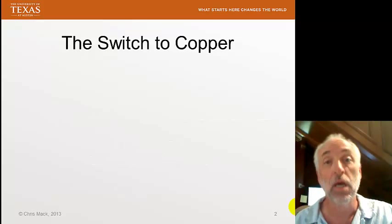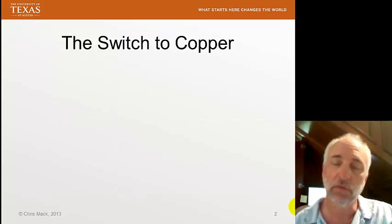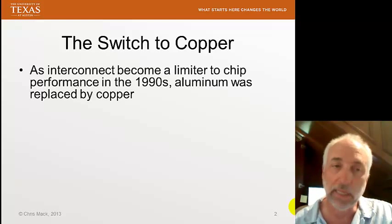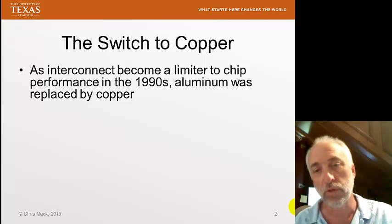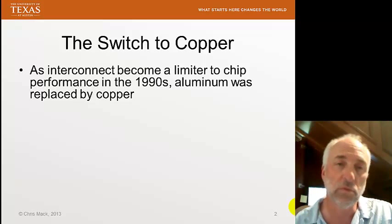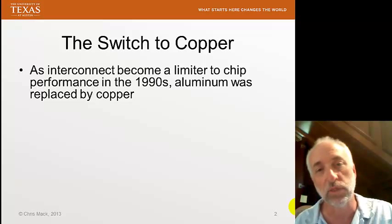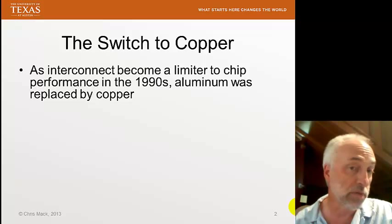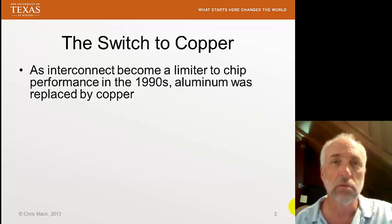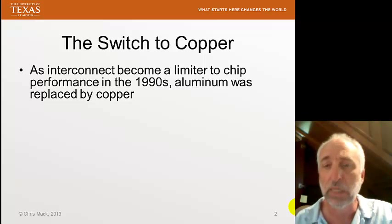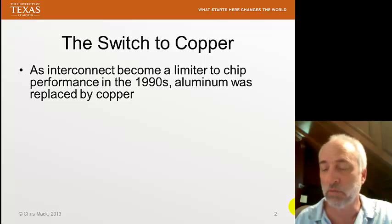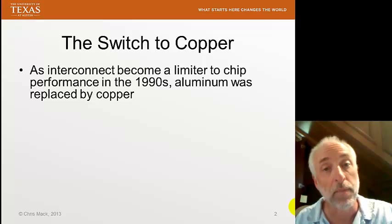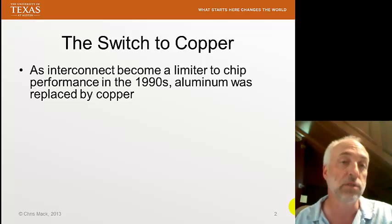As we discussed a few lectures ago in our discussion of interconnects, our industry has already made the switch to copper. In the late 90s or so, before then we were using aluminum, but since then we've, for most of our high-end chips, replaced the interconnects between the transistors with copper. The reason is quite clear: lower resistivity. Copper has about 40-60% lower resistivity compared to aluminum, and the result is a lower RC time constant and faster propagation of signals across the chip.